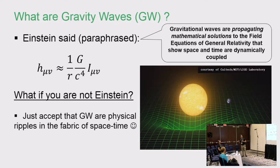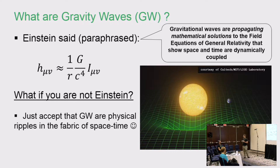Einstein went and did a little more deep thinking about things and came up with a lot of different theories. One of them was the general theory of relativity. Has anyone here actually read the general theory of relativity, or the English translated version of it?